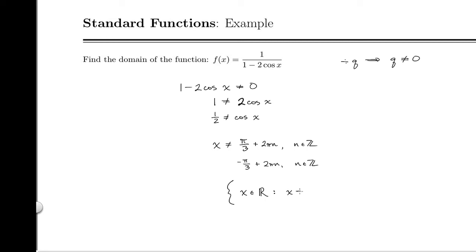It's the set of all x that are real numbers, such that... that's what the colon means... x is not equal to pi over 3 plus 2 pi n, or negative pi over 3 plus 2 pi n, where n is an integer.